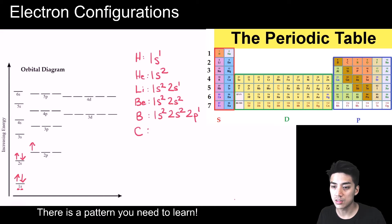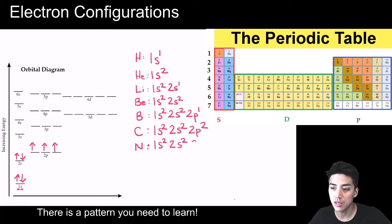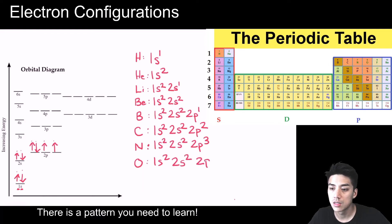Carbon has two electrons in 1s, two electrons in 2s, and two electrons in 2p — so it's 1s2, 2s2, 2p2. Nitrogen has seven electrons: 1s2, 2s2, 2p3. The chart with the arrows tells you what to write. Oxygen has eight electrons: 1s2, 2s2, 2p4. There's a pattern.